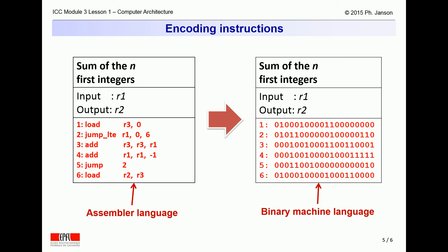The original assembler program can thus be encoded and would be translated into the binary object program shown on the right side of this slide.